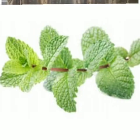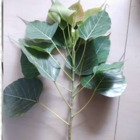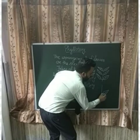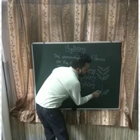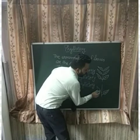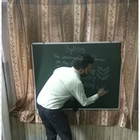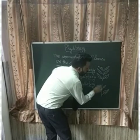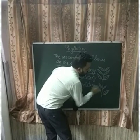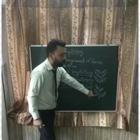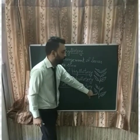Now with the help of a diagram, I am going to show the alternate type of Phyllotaxy. For example, one leaf arises from one node and the second leaf arises from the second node. This is the node, and one leaf arises from one node, another from another node, in the opposite direction.